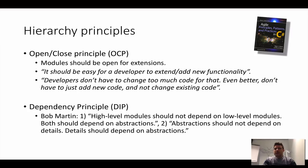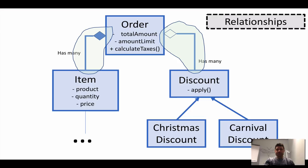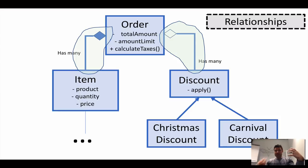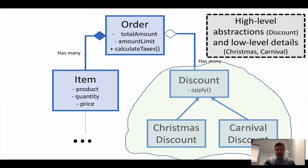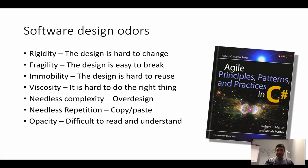We didn't go into a lot of detail here, so you don't have to study these that much for the exam — but in the future, please dive into these concepts because they are very important. As you can see, we have abstractions like 'discount' at a very high level that others depend upon. Order doesn't depend on 'Christmas discount' — order depends on 'discount'. Abstractions depending on abstractions is the goal.